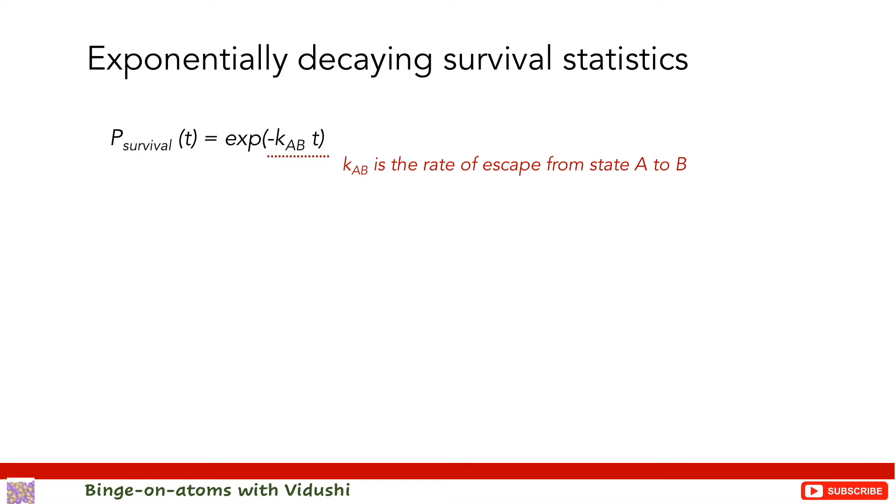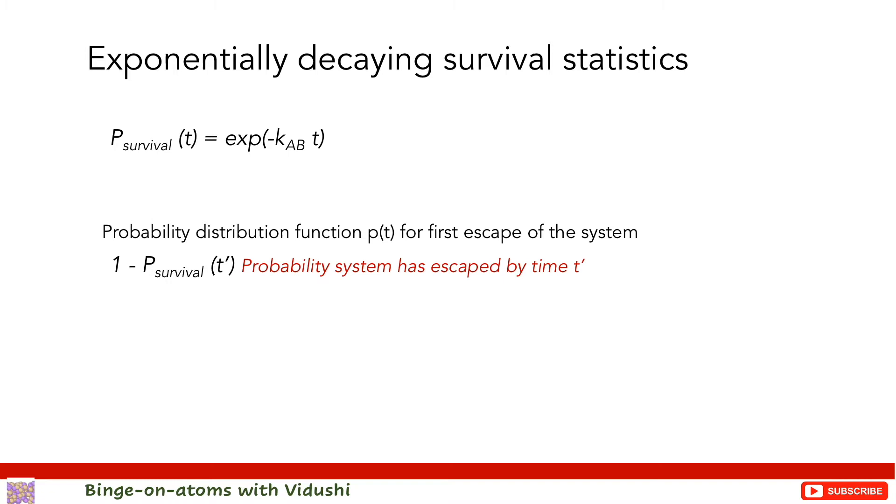Our interest lies in probability distribution function P(t) for the first time of escape. Let time of escape be t'. Then the probability that the system has escaped by time t' equals one minus the probability of the system staying in state A. Thus we can take the negative of the time derivative of P_survival to get the probability distribution function for the time of first escape.